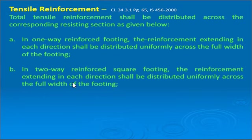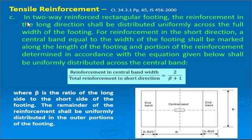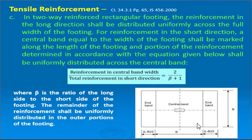In two-way reinforced square footing, the reinforcement extending in each direction shall be distributed uniformly across the full width of the footing. However, while distributing bars along the short span direction, it is necessary to divide them into two bands: a central band and an end band. The distribution of reinforcement follows the equation: reinforcement in central band width divided by total reinforcement in short direction equals 2 divided by (β + 1), where β is the ratio of long side to short side of the footing.